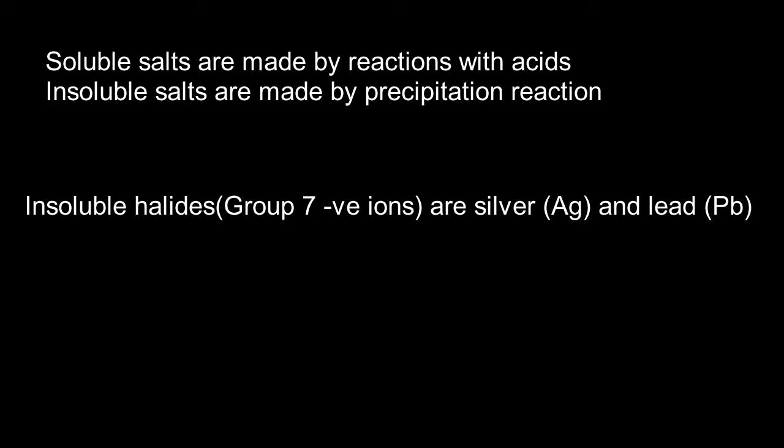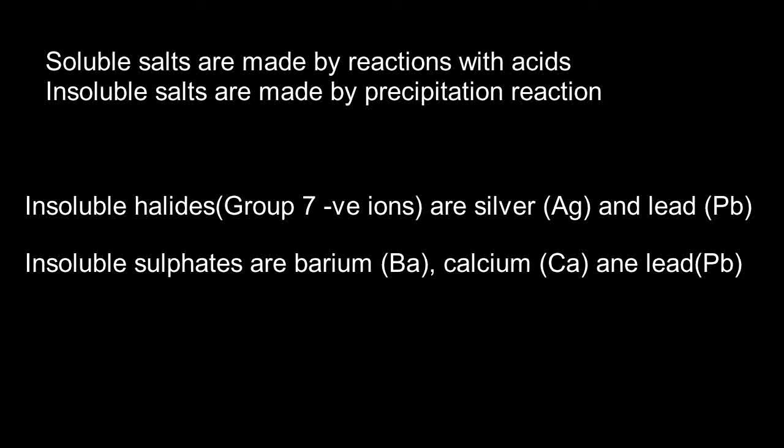Group 7 negative ions: the insoluble ones are silver (Ag) and lead (Pb). The insoluble sulfates are lead (Pb), barium (Ba), and calcium (Ca).